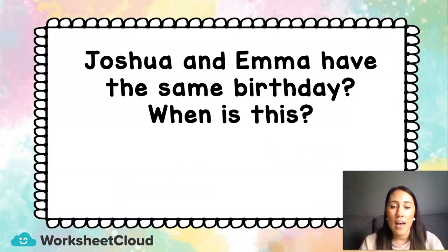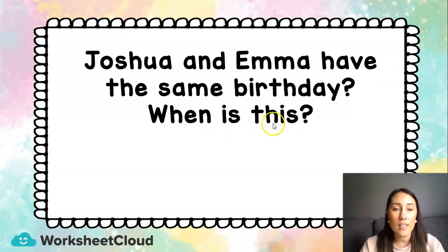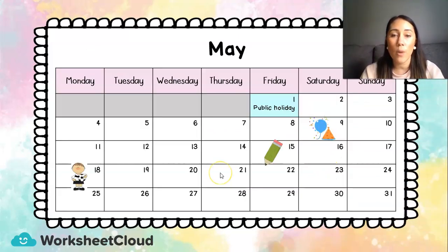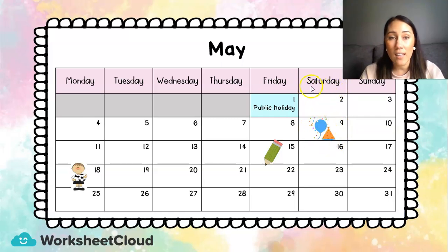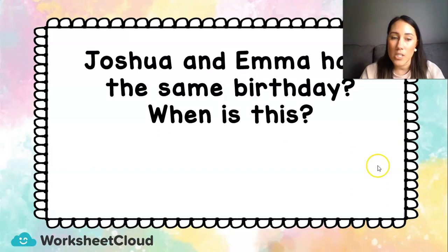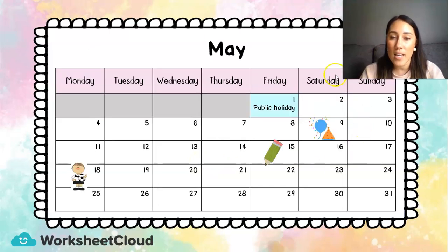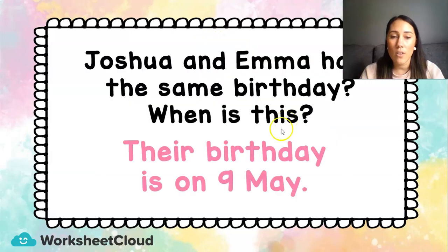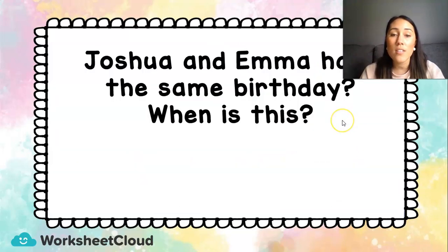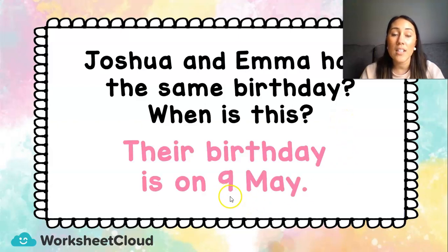Joshua and Emma have the same birthday. When is it? We saw on our calendar a little party hat with a balloon, giving us a clue that it might be their birthday. Looking at the calendar, the day is Saturday and the date is the 9th of May. So their birthday is on the 9th of May. If the question asks which day is their birthday, we say Saturday. If it asks which date, we say the 9th of May.